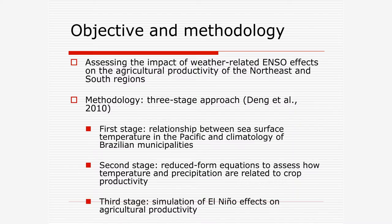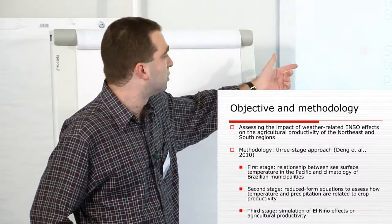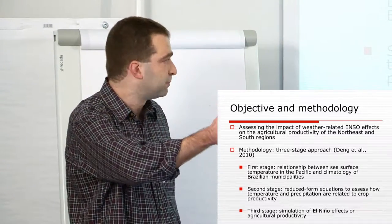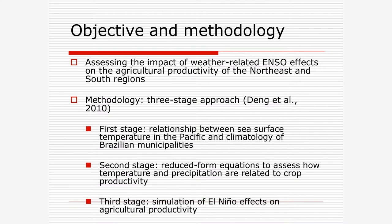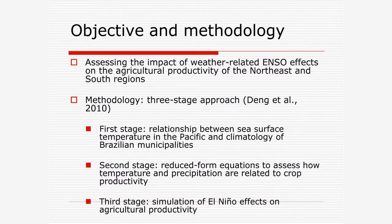Our methodology was based on a three-stage approach. We developed an empirical model, an econometric modeling approach. I will not go very deep in the details. But in the first stage, we want to isolate the effects of El Niño on the Brazilian climatology. We run regressions to assess the relationship between sea surface temperature in the Pacific and climatology in the Brazilian municipalities - how the temperature in the Pacific affects temperature and precipitation in the Brazilian municipalities. In the second stage, we propose reduced form equations to assess how the productivity or the agricultural yields are linked to temperature and precipitation. In the last stage, once we have estimated the parameters of the first two stages, we can simulate what are the effects of El Niño and La Niña on agricultural productivity.